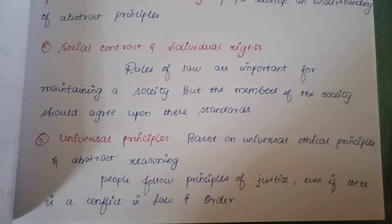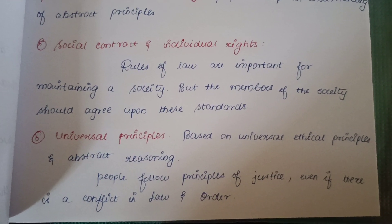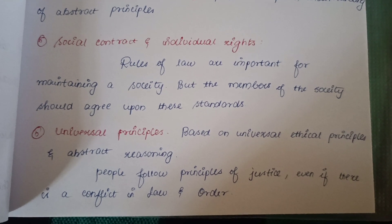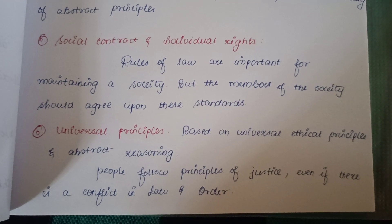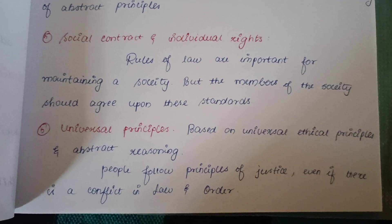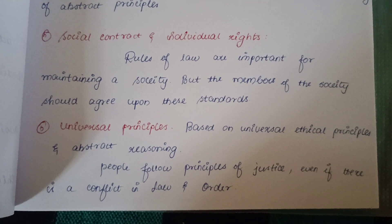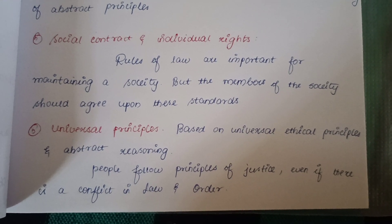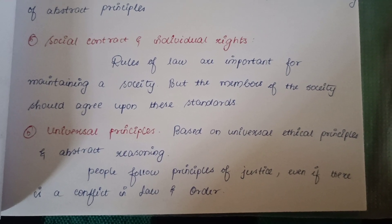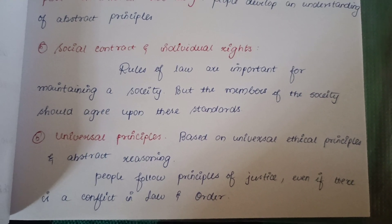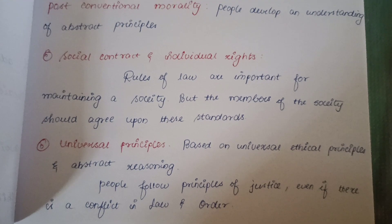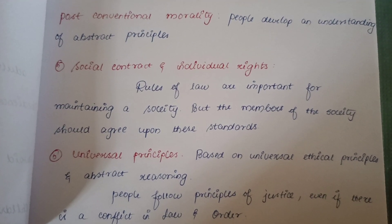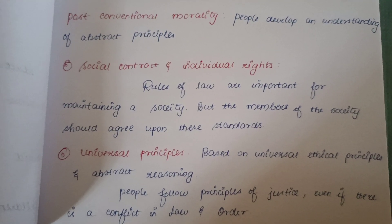The final stage is universal principles — universal truth, ethical principles, and abstract reasoning. People are ought to follow the principles of justice even if there is a conflict with law and order. These are the six different stages of Kohlberg's theory.